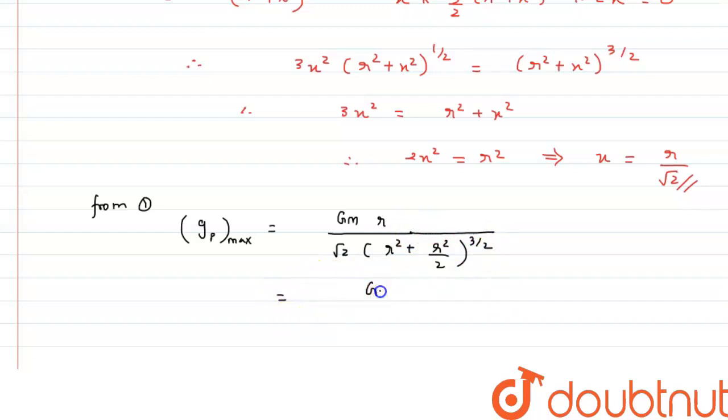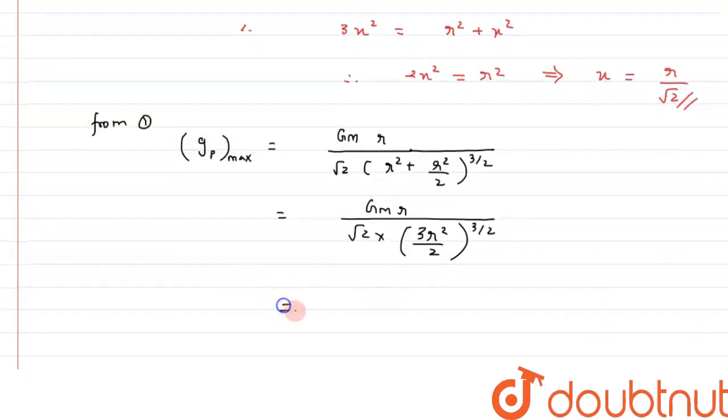we can get the answer as GM divided by root 2 times 3R² by 2, the whole raised to 3/2. So if we resolve it further, we can get the